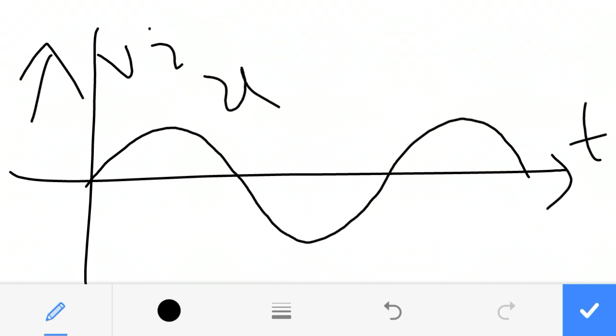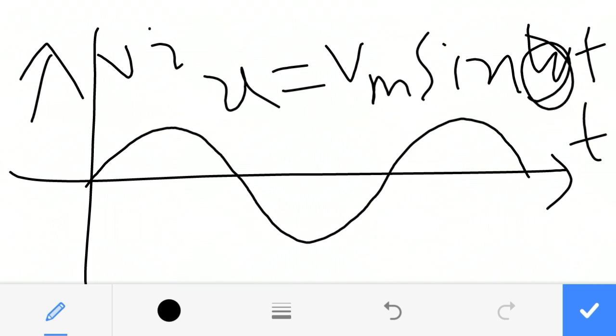It can be represented by the AC quantity V equal to Vmax sin omega t, where this omega is the angular frequency, which is given by omega equal to 2 pi into F, where F is the frequency.